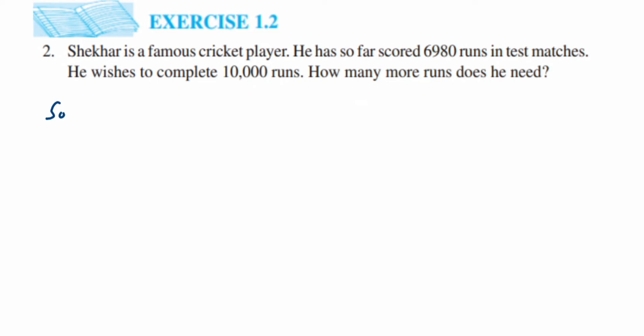So what they have given: Shekhar is a cricket player and he scored 6,980 runs so far, but he wants to score 10,000 runs. So from 6,980, how much more does he have to score to get 10,000? We have to subtract 10,000 and 6,980 to get the answer. Whatever number we get, that much more runs he has to score to get 10,000. So let's start solving this.